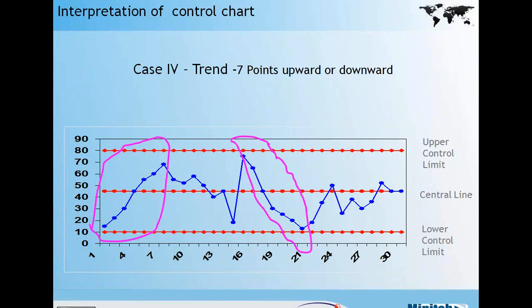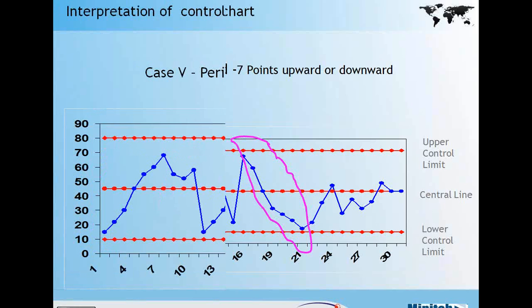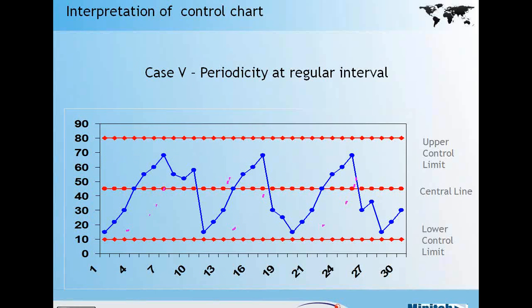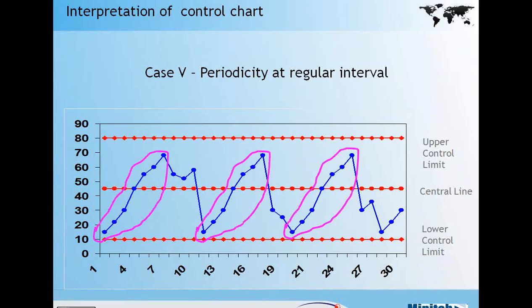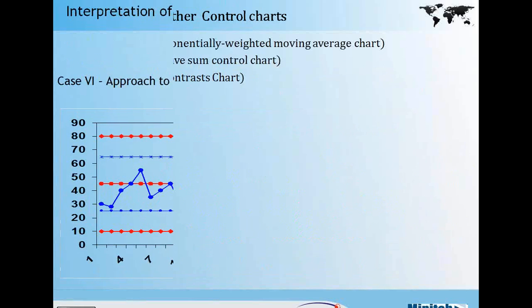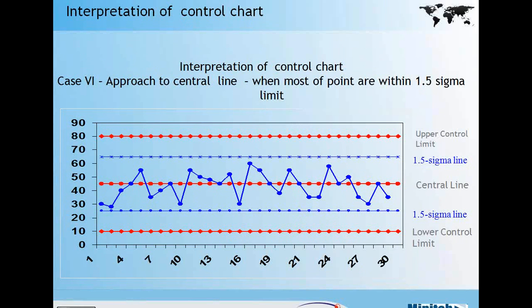Another instance is seven points trending upwards or seven points trending downwards, which requires further analysis. There is also a fourth instance where a periodicity occurs at regular intervals, indicating a recurring pattern. The last pattern is where most of the points are approaching the central line — this also needs analysis to understand whether the data or the process is converging unnaturally towards the average.